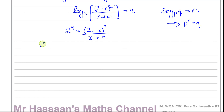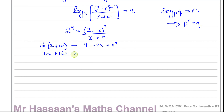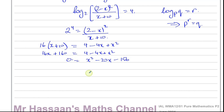2 to the power of 4 is 16, so we have 16 times (x plus 10). Getting rid of the fraction by multiplying by (x plus 10) and expanding (2 minus x) squared gives 4 minus 4x plus x squared. So: 16x plus 160 equals 4 minus 4x plus x squared. Rearranging, we get x squared minus 20x minus 156 equals 0.